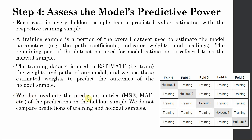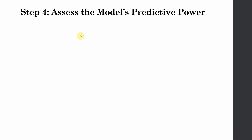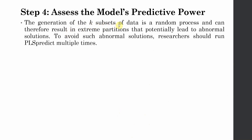We evaluate our prediction metrics based on whatever analysis has been done, and there are multiple ways to do this prediction. The generation of k subsets of the data is a random process and can therefore result in extreme partitions that potentially lead to abnormal solutions. To avoid such abnormal solutions, researchers should run PLS Predict multiple times. K=10 is recommended and is the default in SmartPLS.